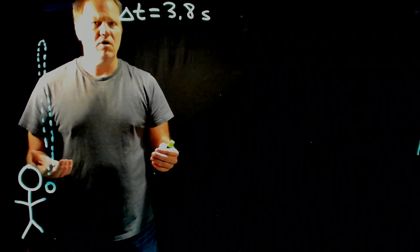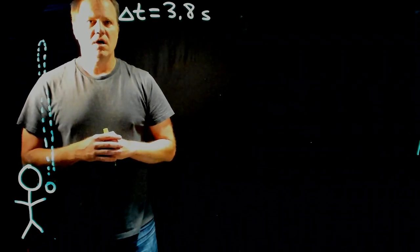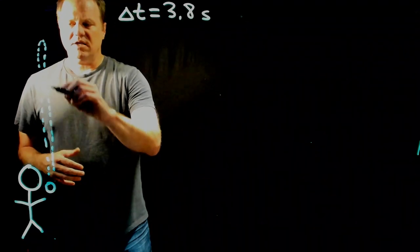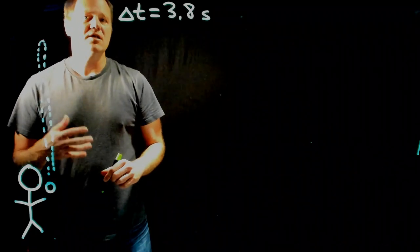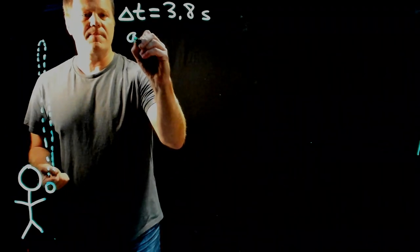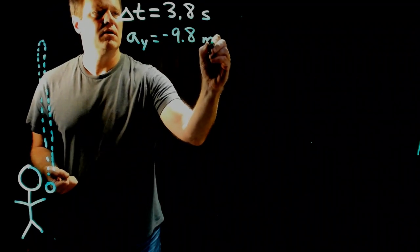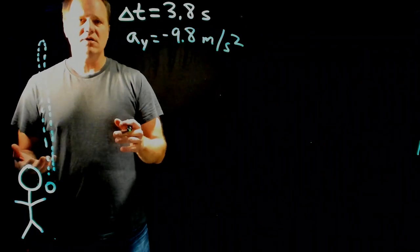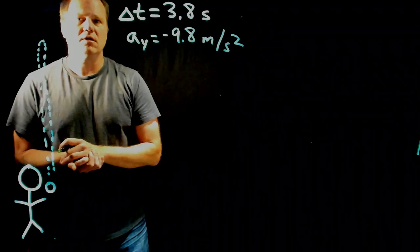You might pause the video and think about what implicit information is given in this scenario. First, think about the acceleration of this ball. Once the ball leaves the person's hand, it is in free fall — under the influence of gravity alone — and it will accelerate at negative 9.8 meters per second squared. I never said this occurs on Earth, but that's a reasonable assumption.